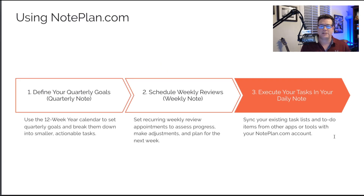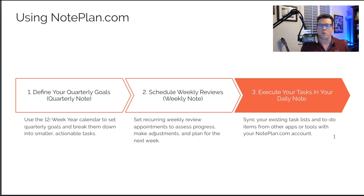The system basically requires you to define your quarterly goals. In NotePlan, there's actually a quarterly note that lives forever inside the app. You can have one actual note for each quarter and define your quarterly goals there. You can even modify them as the quarter goes along, which is what I do. And you can use the calendaring system inside NotePlan, because NotePlan is a calendar-based note-taking software, to actually plan out your 12 weeks.